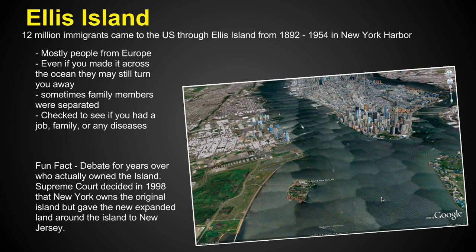Ellis Island is a unique situation — from 1892 to 1954 in New York Harbor, 12 million immigrants came through this facility to immigrate to the United States. It's not in use anymore; it exists as a monument. Most people coming through Ellis Island were from Europe. Even if you made it all the way across the ocean, the people running Ellis Island might still turn you away and make you go back on your ship. Conditions on the ship were miserable — sometimes it took two weeks, sometimes two months.